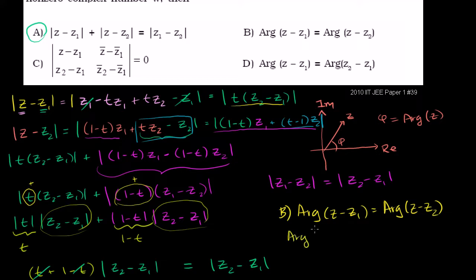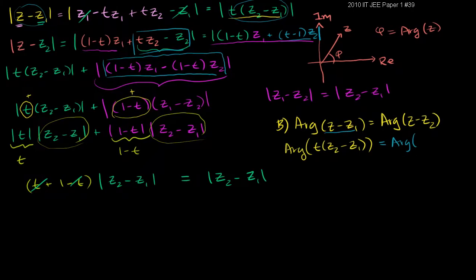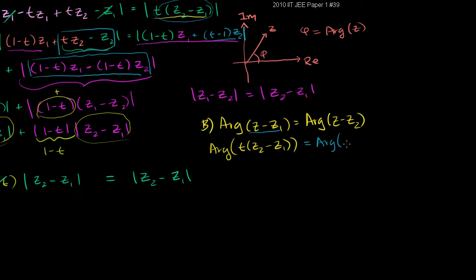So this is equivalent to saying that the argument of t times (z2 minus z1) — leveraging the algebra we already did — is equal to the argument of z minus z2. We can rewrite z minus z2 as 1 minus t, factoring out (1 minus t) times (z1 minus z2).